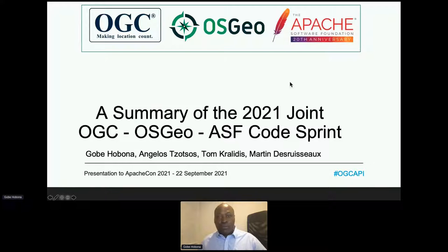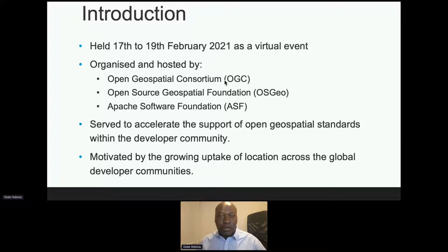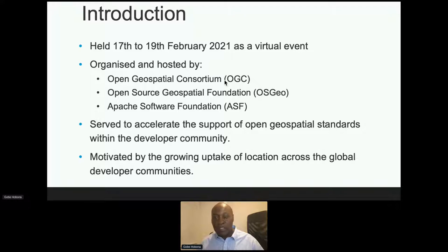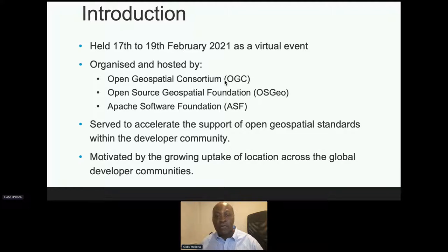The joint OGC OSGeo ASF code sprint was held in February, from February 17th to the 19th. We held it as a virtual event because of the pandemic, and we organized the code sprint specifically to help accelerate the support of open geospatial standards within the developer community. The idea was to bring in developers from across the foundations and the consortium and to provide a platform and environment in which those developers can advance the implementation of open geospatial standards, as well as to provide feedback to the working groups that develop open geospatial standards.